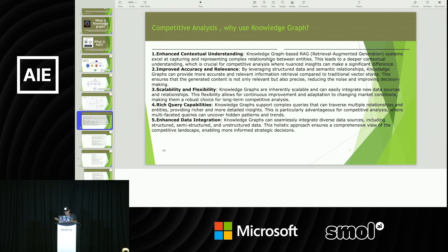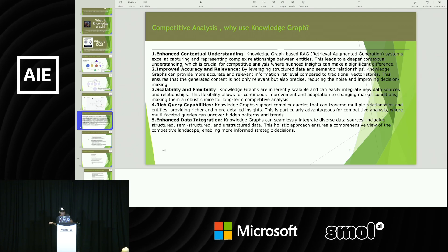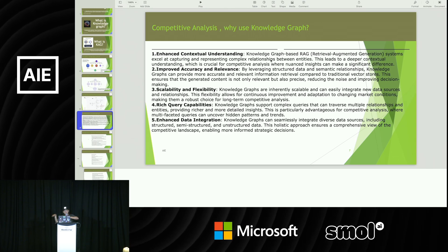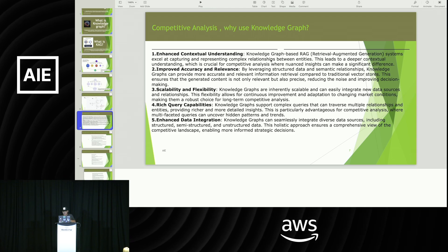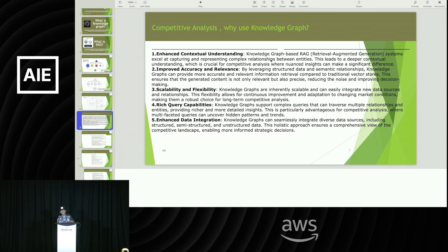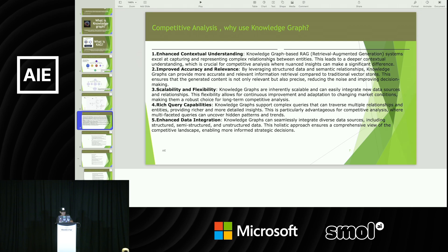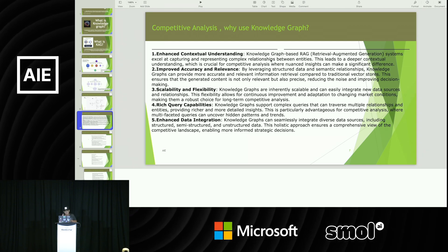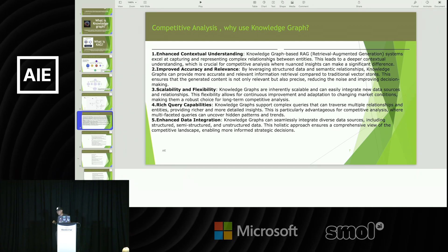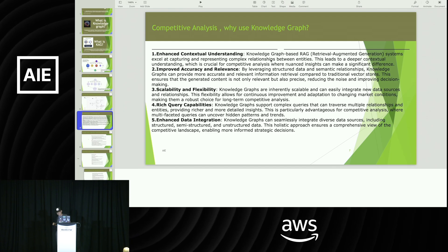Third is scalability and flexibility. Knowledge graphs are inherently scalable and can integrate new data sources and relationships — the flexibility allows continuous improvement. If your taxonomy is correct, you will continue to improve and enrich it. Fourth is rich query capability. Knowledge graphs support complex queries that traverse multiple relationships and entities, providing richer and more detailed insights. This is particularly advantageous for competitive analysis with multi-faceted and multi-hop queries that normal RAG would fail to answer.